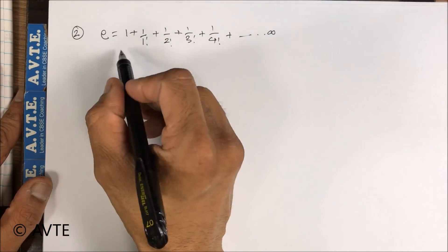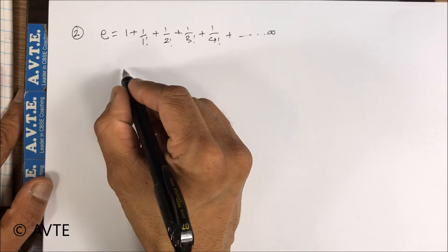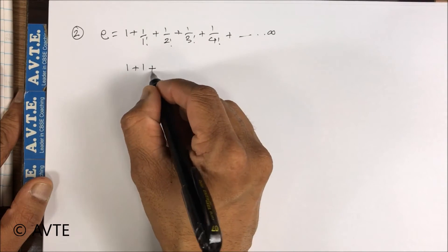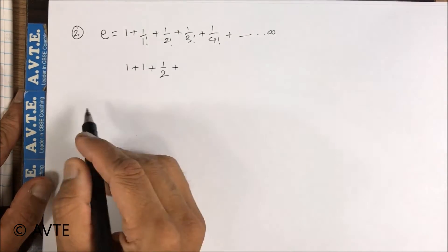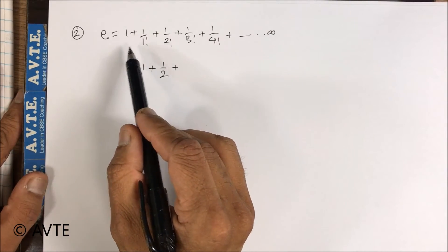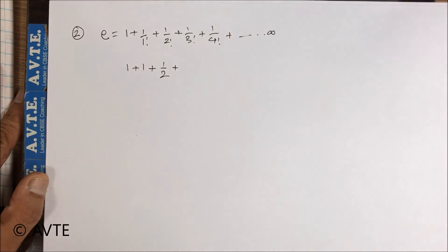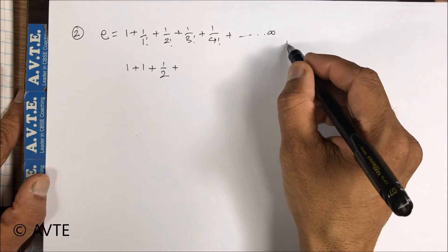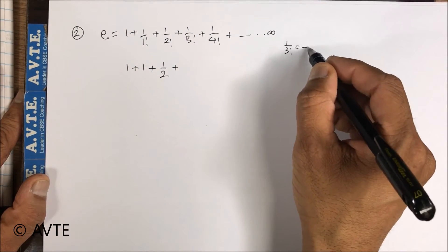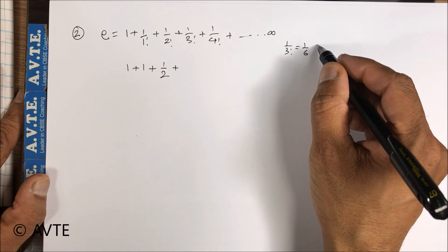Now if we consider first three terms and write them and compare only first three terms in both the series, then they are equal. But what is 1 by 3 factorial? That is 1 by 6, and 1 by 6 is less than 1 by 4.